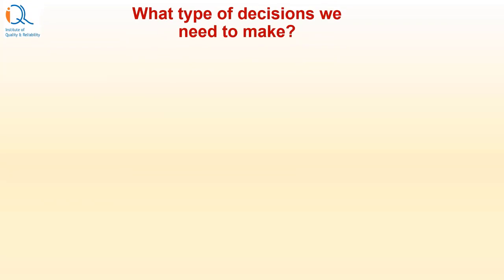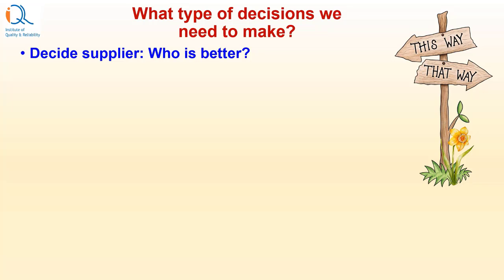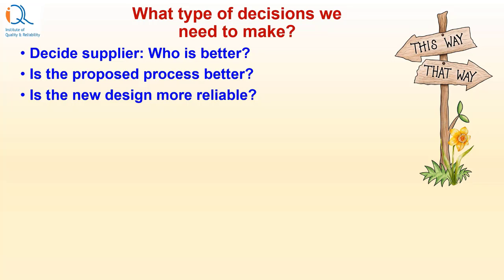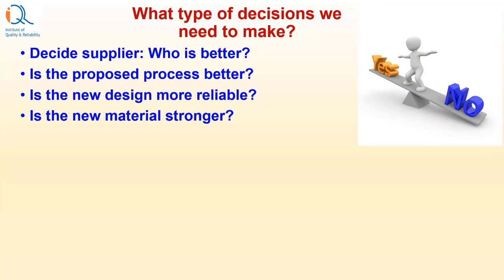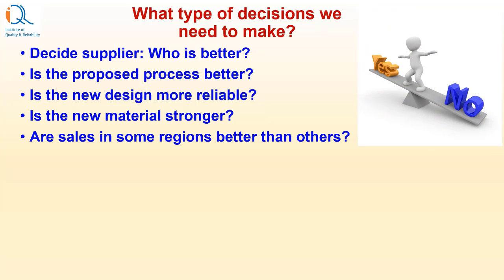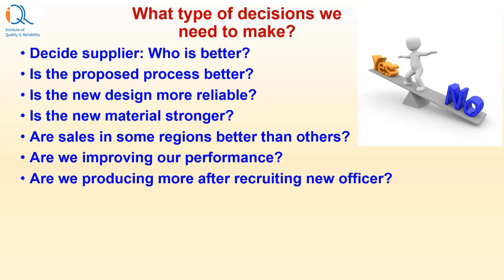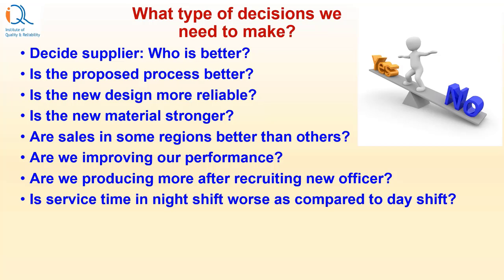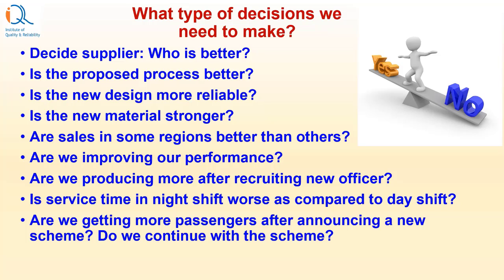So what kind of decisions do we need to make? Here are some examples: Decide supplier — who is better, Supplier A or Supplier B? Is the proposed process better than the existing process? Is the new design more reliable? Is the new material stronger? Are sales in some regions better than other regions? Are we improving our performance — are we producing more after recruiting a new officer? Is service time in night shift worse compared to day shift? Are we getting more passengers after announcing a new scheme? Do we continue with the scheme?